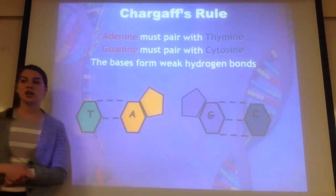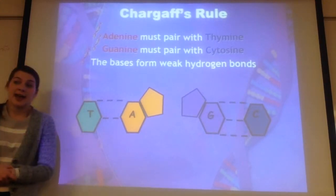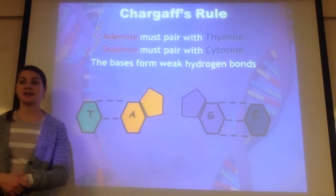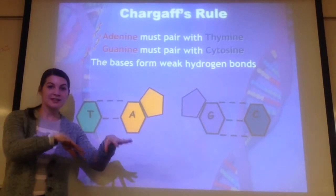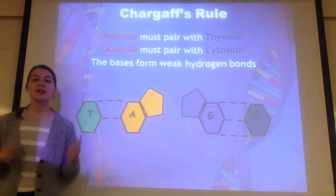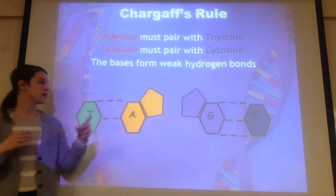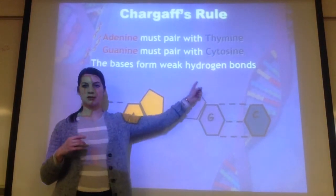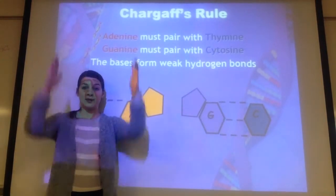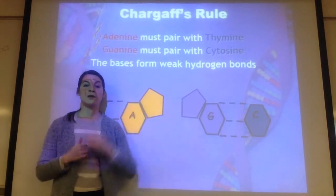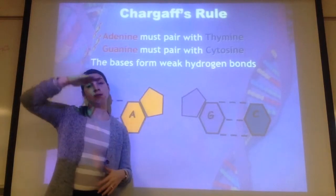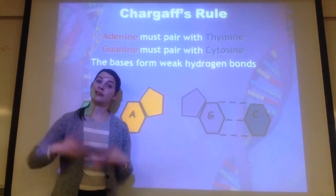To reiterate Chargaff's Rules: adenine must pair with thymine, and guanine must pair with cytosine — A equals T, G equals C, always, unless there are mutations. These bases are going to bond together by weak hydrogen bonds, which is what holds them together. Remember, these bases are on the inside of the DNA. If you think of DNA like a ladder, you have the sides of the ladder and the bases are on the inside.